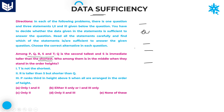Given that S is the immediate taller than the shortest, the shortest is at the bottom, so S is the second from bottom. Q holds the second highest position, and the remaining 3 positions are unknown. The question asks: who among them is in the middle when they stand in order of heights?